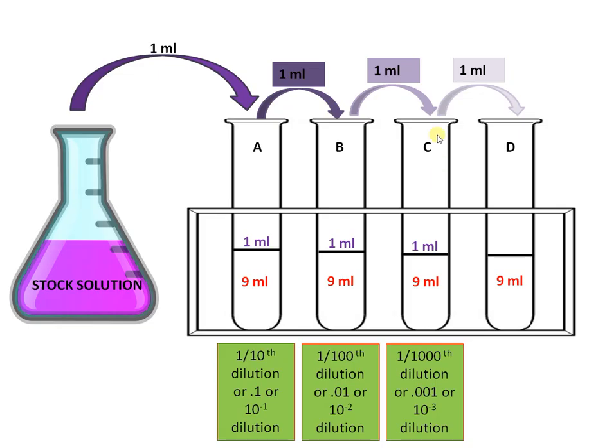Mix well and transfer 1 ml from test tube C to test tube D, and we will be getting 1 by 10000 dilution or 10 raised to minus 4 dilution. So in each step we have diluted the stock solution 10 times, making it 1 by 10000 at the end.